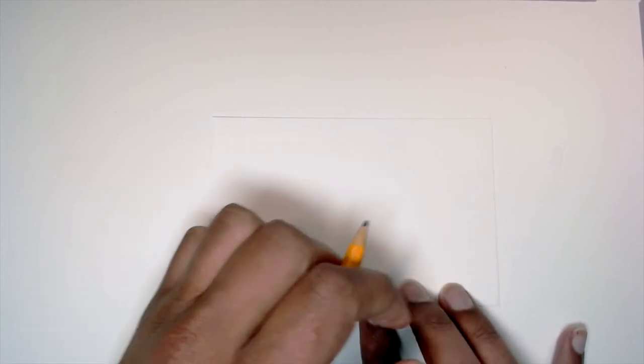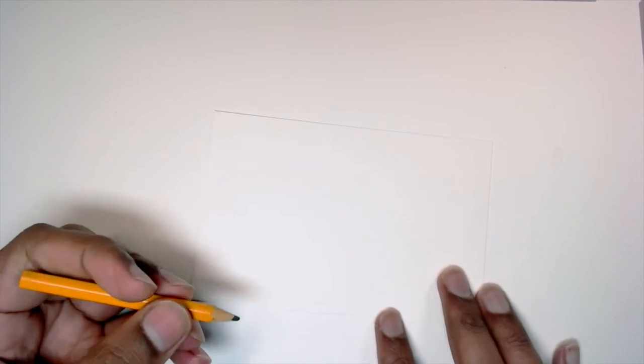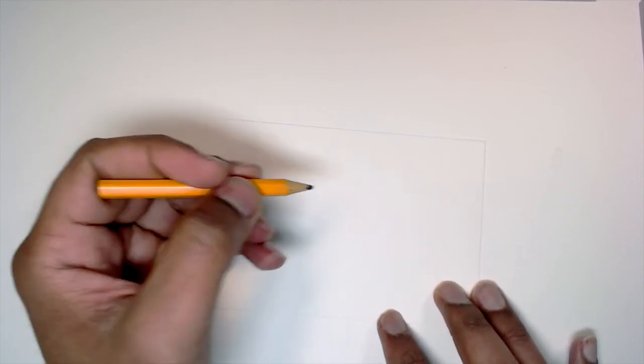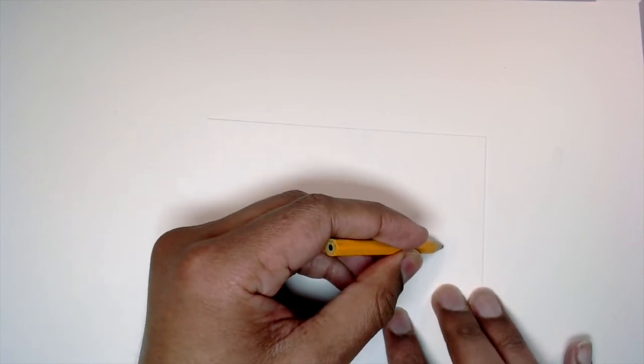So I'm going to start by just sketching out the shape. I have a pencil and eraser here. And the shape I'm going to sketch out, I'll start with the body. So I'll do kind of this eye shape.